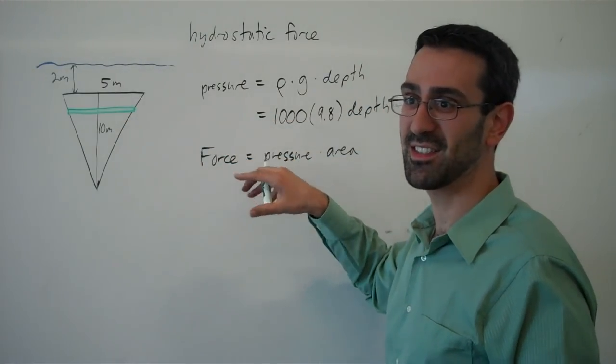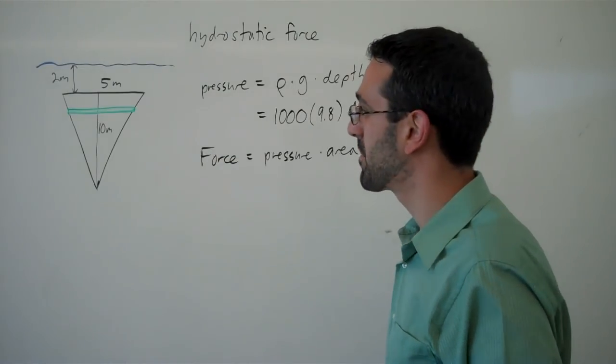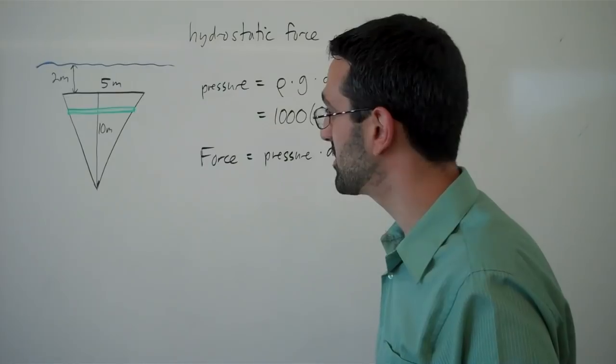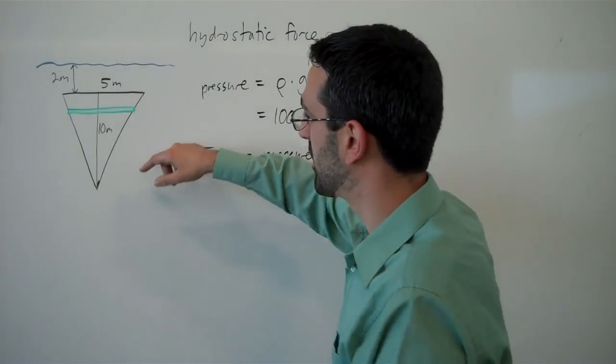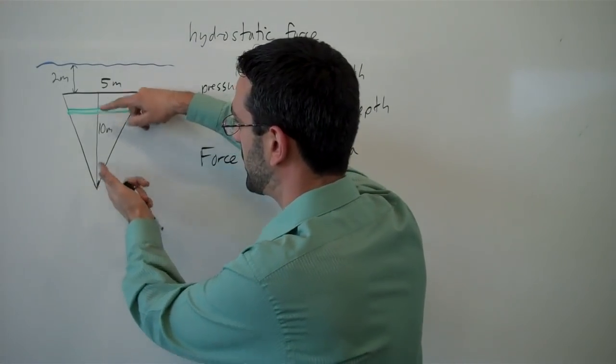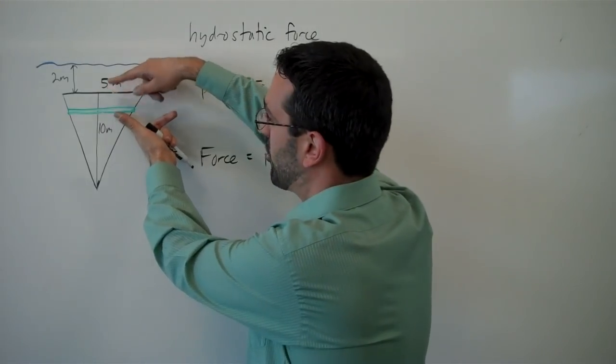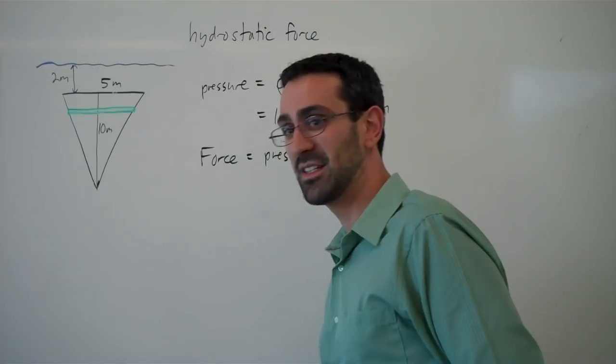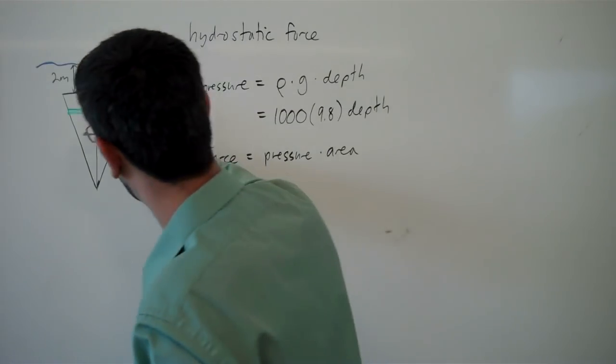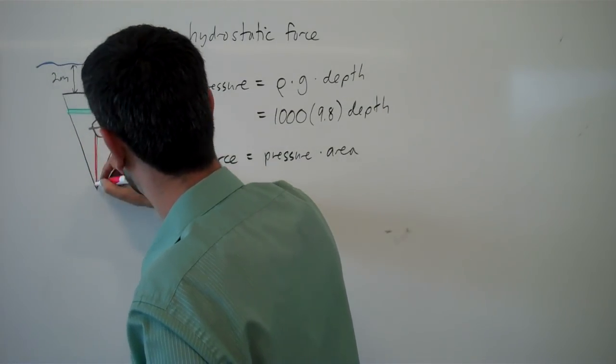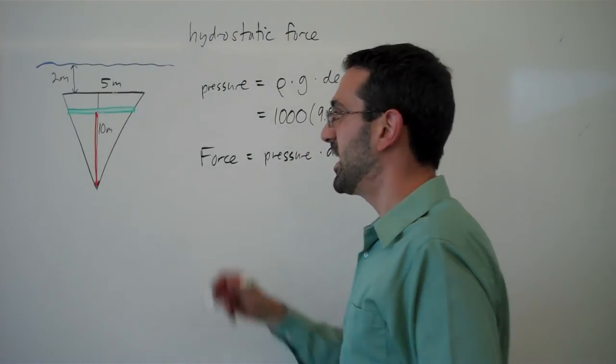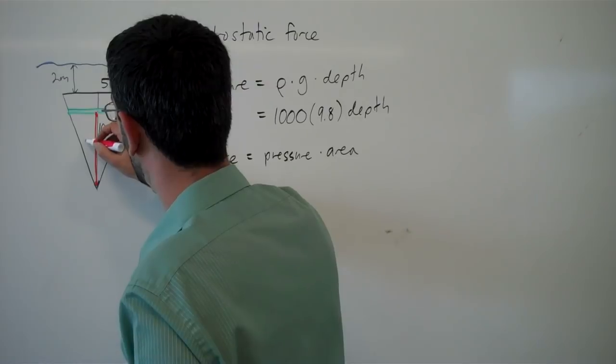We need to introduce a variable for the location of the slice. We could use various measurements, but I find it most convenient to use the measurement from the tip of the triangle, and I'm going to call that length y.